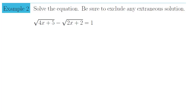Here's our second example. We have to solve the equation √(4x+5) − √(2x+2) = 1. When you have two roots being added or subtracted, the equation becomes a lot more complicated to solve. It's still the same basic procedure, but you run into the problem of having to square both sides twice. Let's go through our steps 1, 2, 3, 4 like the other examples and try to keep it as simple as possible.